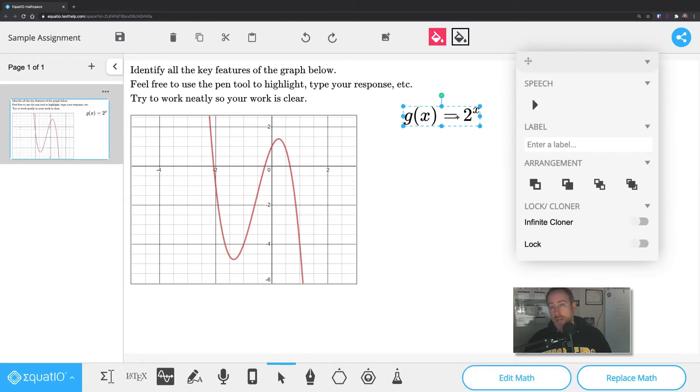And you can do all sorts of stuff. So when you have it highlighted, you can have it speak it to you. You can enter in a label to it, arrange it forward, backward, all this other stuff. We're not going to worry too much about that. You can play around with that.